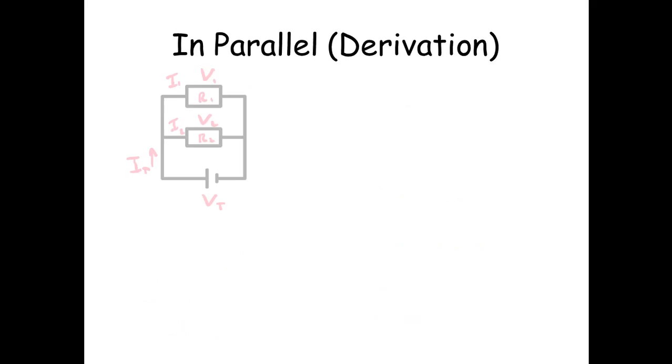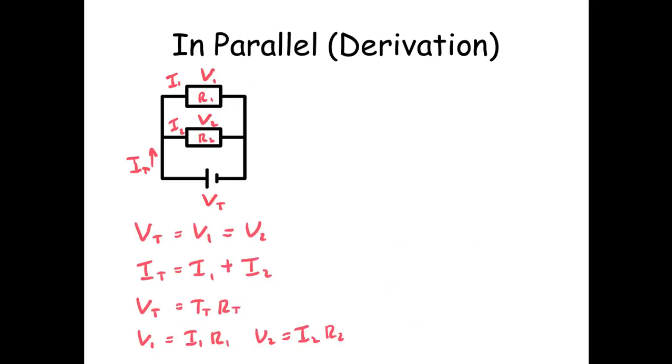So what about in parallel? So in parallel, this time the voltage across each component is the same. So the voltage out from our little cell there is going to equal the voltage across V1 and the voltage across V2. They're all equal.